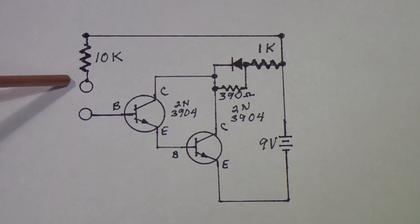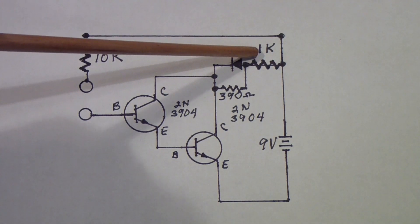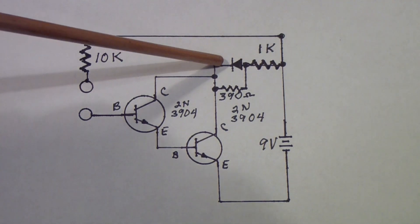And I'll be honest, I chose the 10k just because I had chosen a 1k for a limiting resistor on the LED.